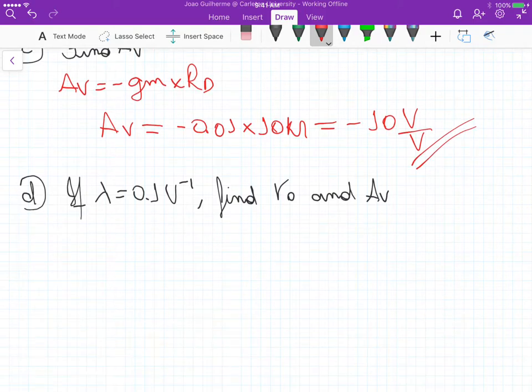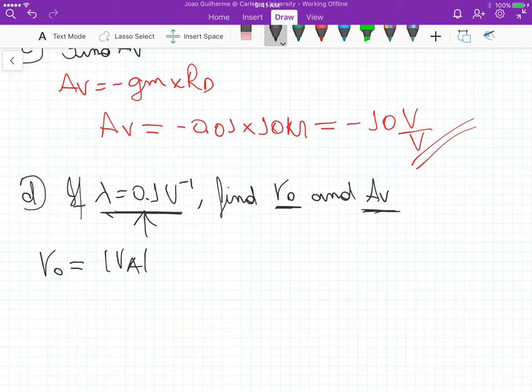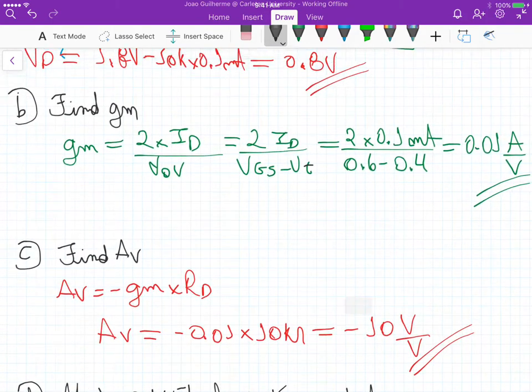For part D, now we have to consider the channel modulation effect. We have lambda equals 0.1, and we need to find the output resistance and the new voltage gain. The output resistance equals the magnitude of the early voltage divided by the drain current. We also know that the early voltage equals 1 over the channel modulation parameter, so 1 over 0.1, which is 10 volts.